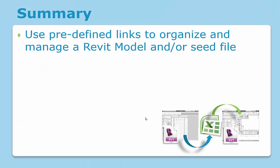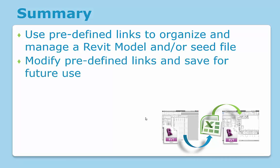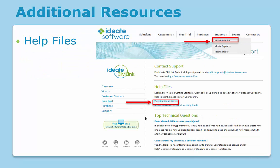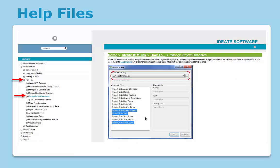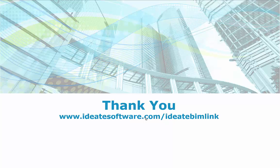The predefined links in the project standards directory of ID8 BIMLink can be used to more efficiently organize and manage a Revit model based on your project or office standards. We can also modify the links as needed and save for future use, or possibly for inclusion in your office template. For additional information on ID8 BIMLink project standards links, please check out our help files, which can be found under the Support tab. Select ID8 BIMLink, then under the heading Help Files select the link to view the help files, navigate to the ID8 BIMLink section, then the How-to section, and select Manage Project Standards. ID8 is an authorized Autodesk developer with over 25 years of experience. For more information, visit us at ID8software.com/ID8BIMLink.